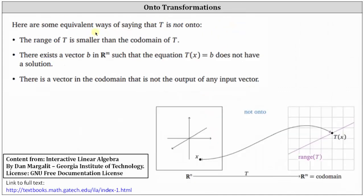Now let's talk about equivalent ways of stating a transformation is not onto. If the range of T is smaller than the codomain of T, the transformation is not onto. Looking at the mapping below, notice how the range is a line and the codomain is R^2 — the range is smaller than the codomain, so this is not an onto transformation. There exists a vector b in R^m such that T(x) = b does not have a solution.